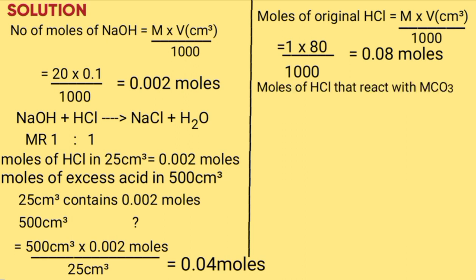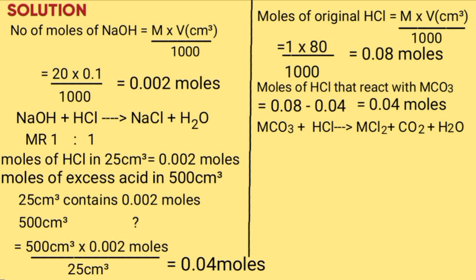Moles of acid that reacted with MCO₃ = original moles of HCl minus excess moles of HCl in 500 cm³ = 0.08 − 0.04 = 0.04 moles. The equation between MCO₃ and hydrochloric acid is: MCO₃ + 2HCl → MCl₂ + CO₂ + H₂O. The balanced equation uses 2 moles of HCl. The mole ratio of MCO₃ to HCl is 1 to 2.